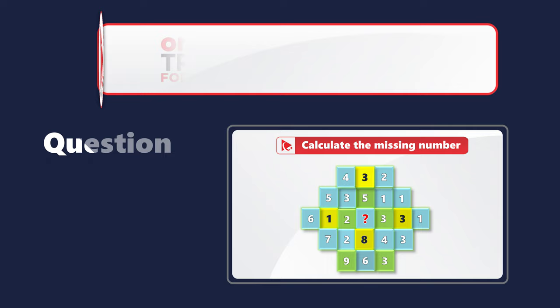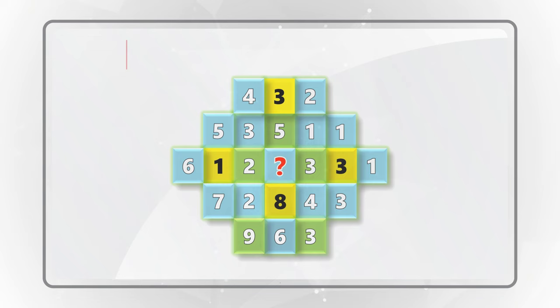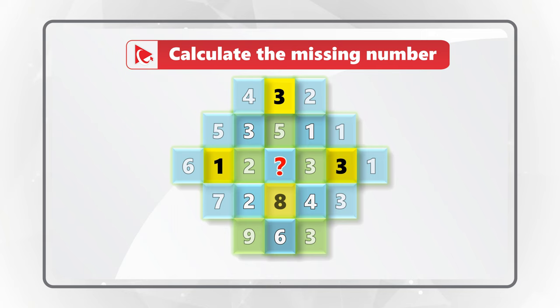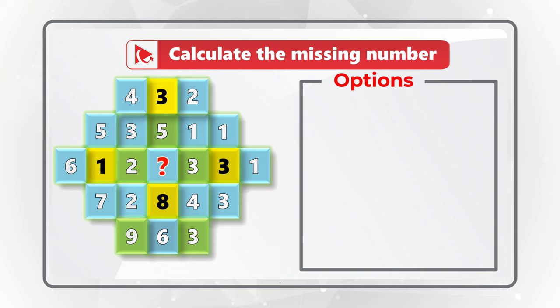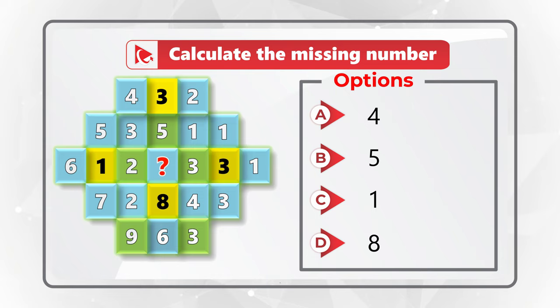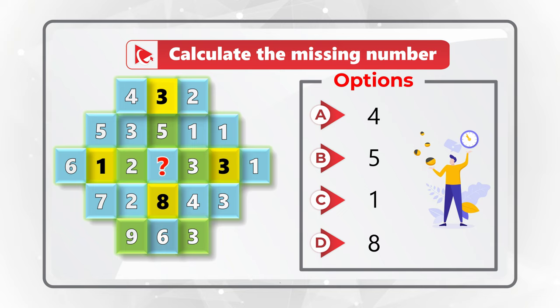Here is the analytical skills and pattern recognition question, which might trick you to the wrong answer. You are presented with a very unusual looking shape which has multiple boxes and numbers inside the boxes. You need to calculate the missing number represented by the question mark in the middle of the box. You have four different choices: A, B, C, and D. Take a close look to see if you can come up with the solution — give yourself maybe 20 to 30 seconds, and pause this video if needed.